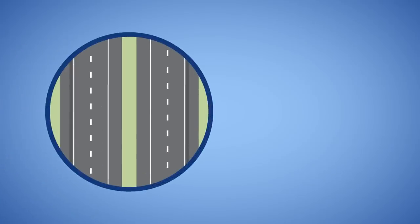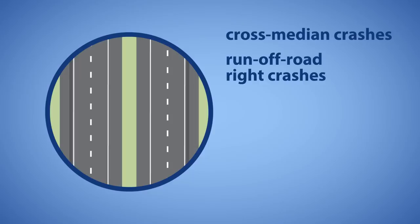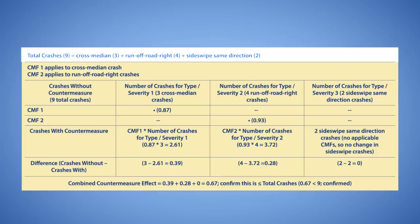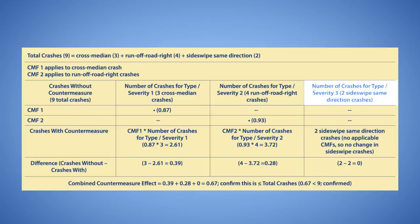As an example, consider one direction of a rural, four-lane, divided highway segment where there is currently no median barrier. The agency identifies cross-median crashes as well as run-off-the-road-right crashes — including fixed-object and rollover crashes — as concerns along this section. There are shoulder rumble strips along the right shoulder, but no rumble strips along the median shoulder. The two countermeasures of interest are installing median shoulder rumble strips and installing new guardrail along the right side of the road. The total crashes comprise three cross-median crashes, four run-off-the-road-right crashes, and two side-swipe same-direction crashes.